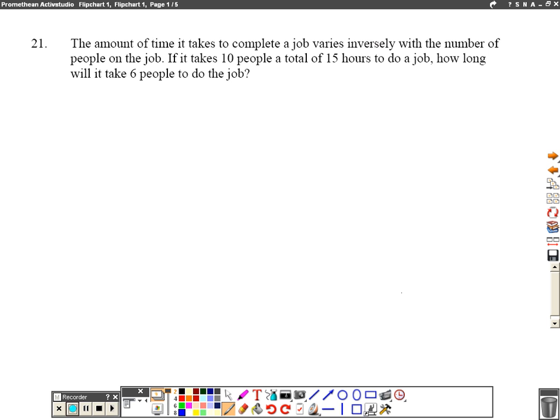Alright, in 21, it says that the amount of time it takes to complete a job varies inversely. And when we have varies inversely and varies directly problems, we need to remember what our formulas are. Varies directly is y equals k times x.